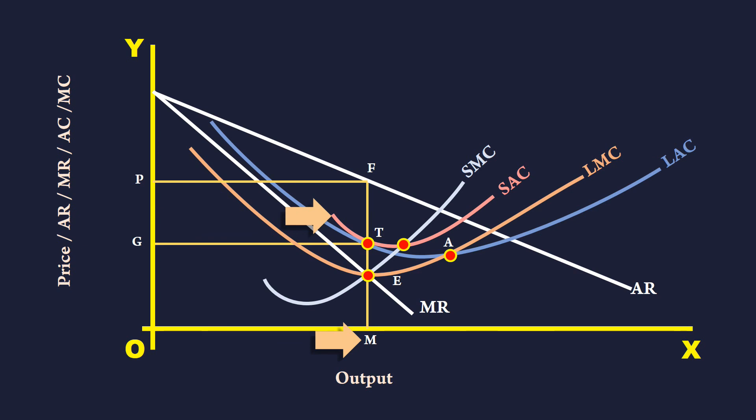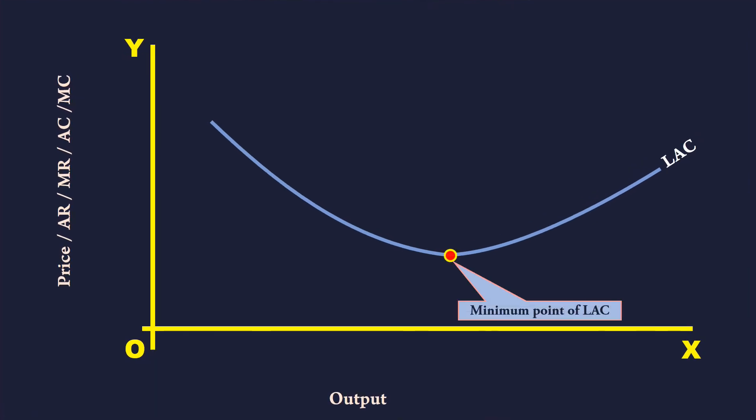It is time for you to understand this is not the only possible equilibrium state of a monopoly firm always. Monopoly firm may be in equilibrium at the minimum point of the long run average cost curve or on a point at which long run average cost curve is rising.